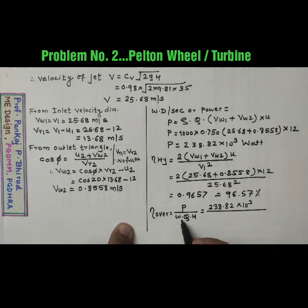W means rho of water is 9.81 into 1000, that is 9810 into Q is 0.750 into 35. So we will get overall efficiency that is 92.74%.